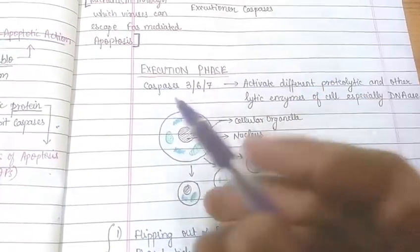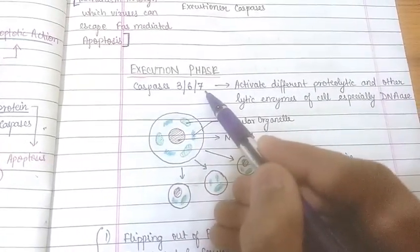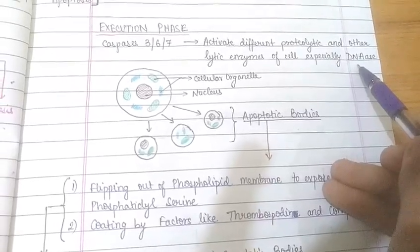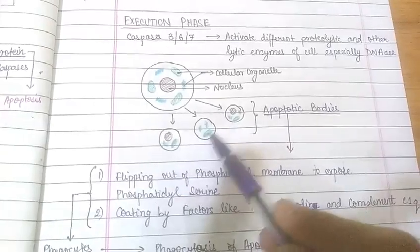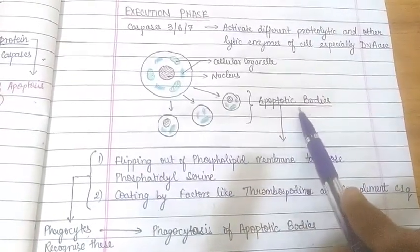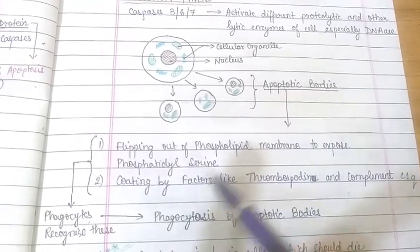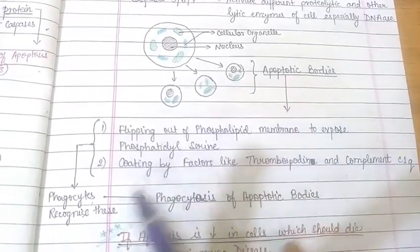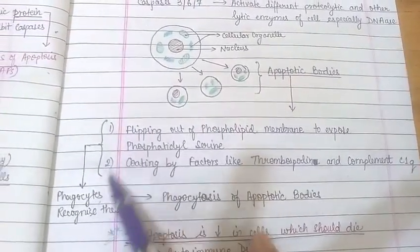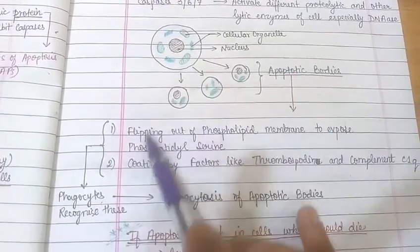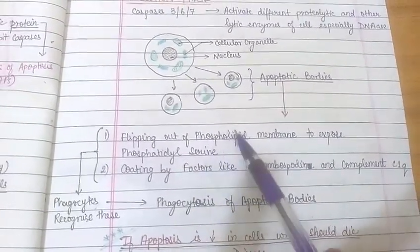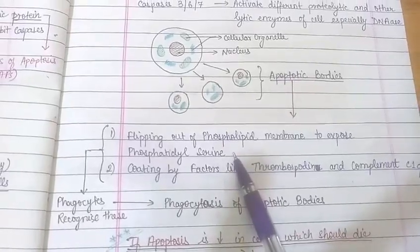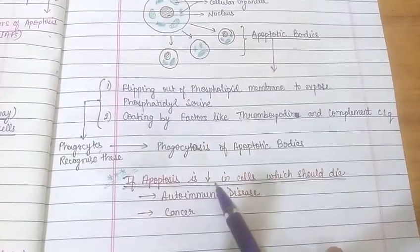In the execution phase, executioner caspases 3, 6, and 7 activate different proteolytic and other lytic enzymes of the cell, especially DNases, leading to formation of apoptotic bodies. Apoptotic bodies are characterized by flipping out of phospholipid membrane to expose phosphatidylserine, and coating by factors like thrombospondin and complement C1q. Phagocytes recognize these two features and phagocytose the apoptotic bodies.